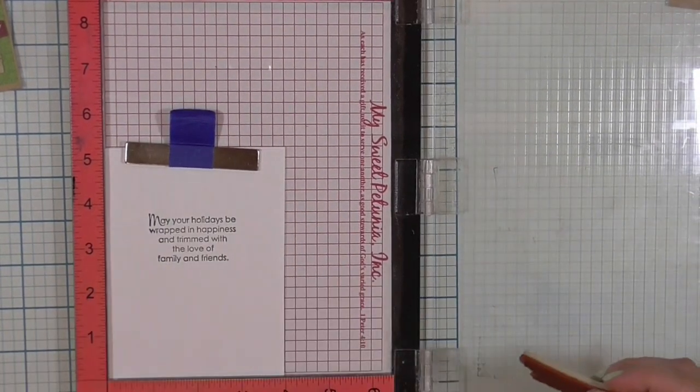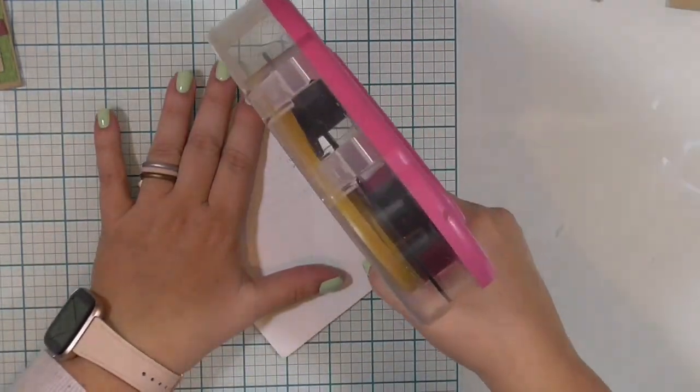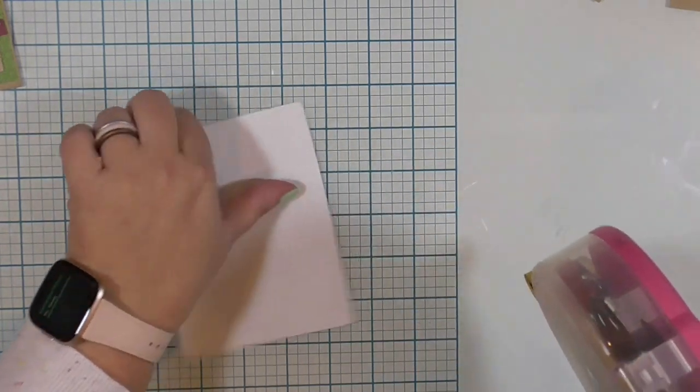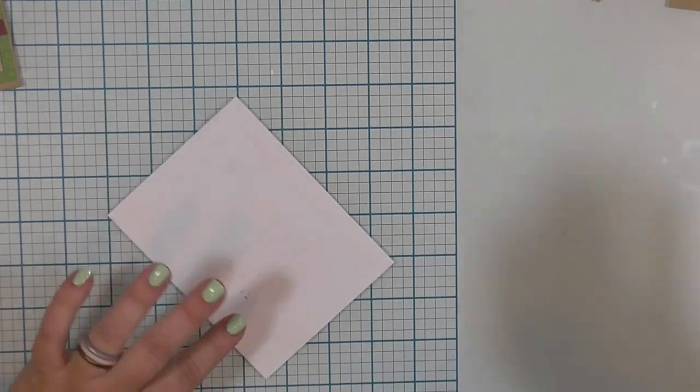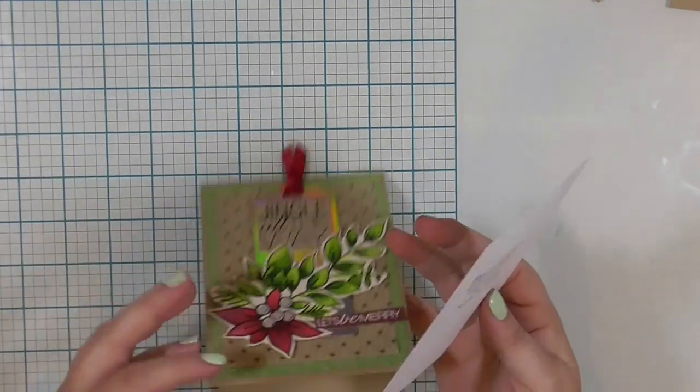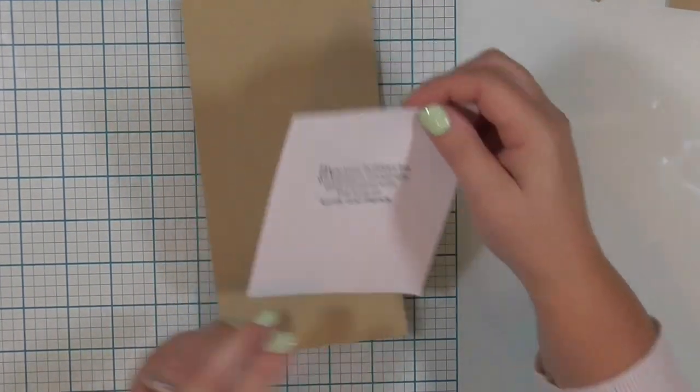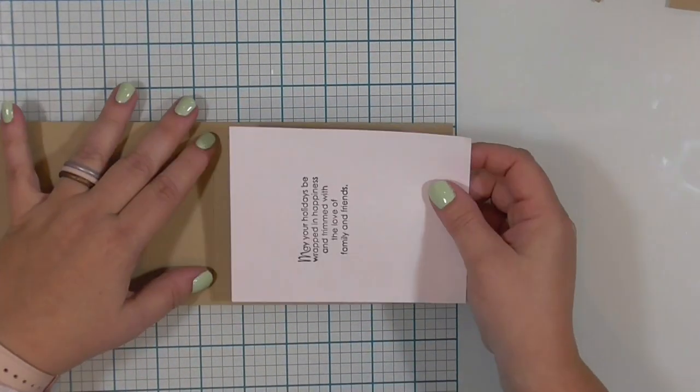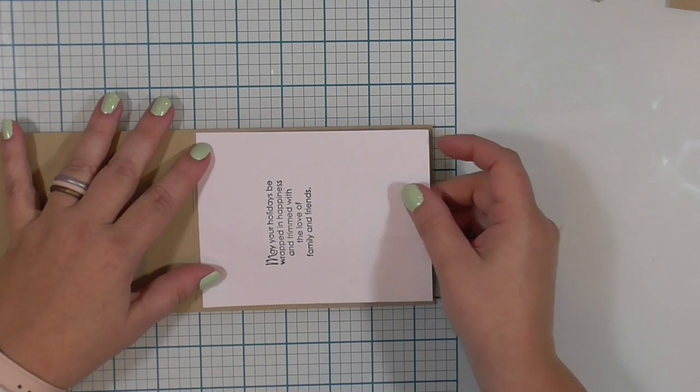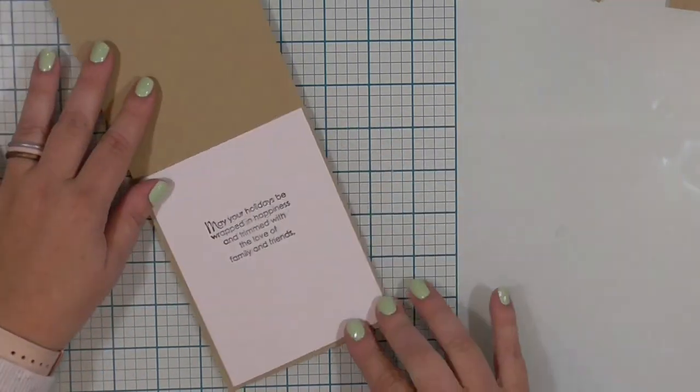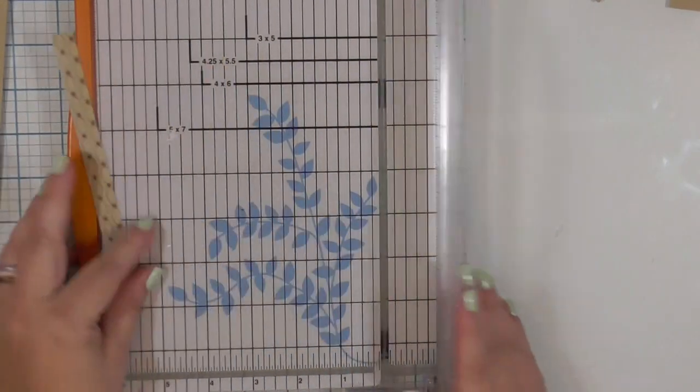All right, I'm going to go ahead and adhere this panel to the inside of my card. This is just a piece of copy paper. It's like 24 pound copy paper. It has been trimmed down to fit on the inside of the card. So it's about four inches by five and a quarter inches. I'm just using my grid mat and my fingers to line that up because again, while I have control issues, I don't have measure all the things itis.